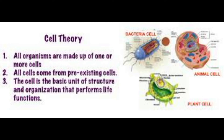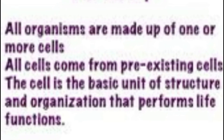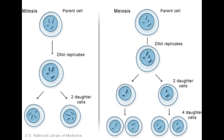Number two: all cells come from pre-existing cells. So where do cells come from? Pre-existing cells. How does this happen? It happens when one cell divides and becomes two cells — it's called cell division. You've heard about some of this: it's mitosis, meiosis. But the main thing for cell theory is to know that all cells come from other cells.